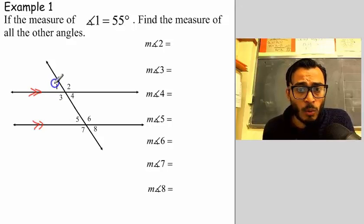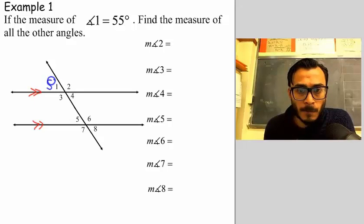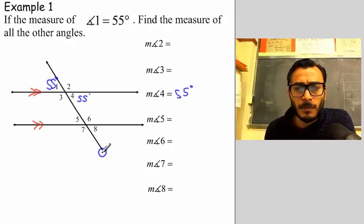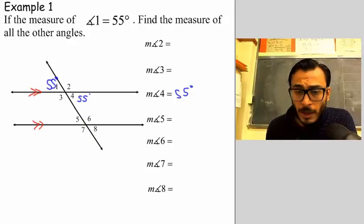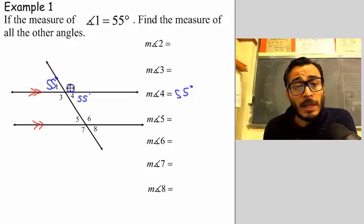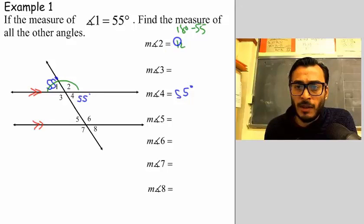We know that if angle one is 55 degrees — let me go ahead and write 55 degrees here — then we know that angle four is automatically 55 degrees. That's because these two are vertical to each other. We also know that angle one and angle two are linear pairs, so angle two is the result of subtracting 55 from 180, because these two must add up to 180. So 180 minus 55 is 125.